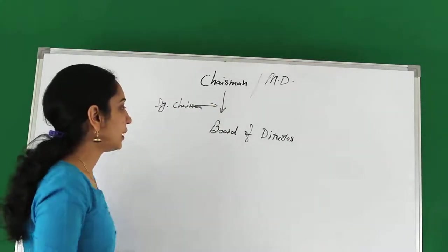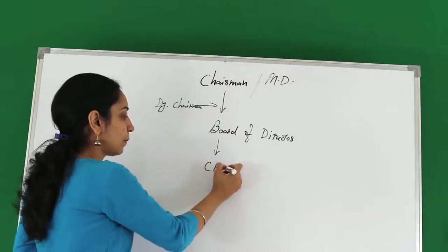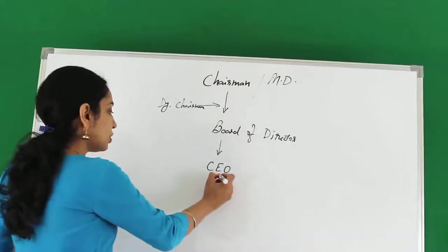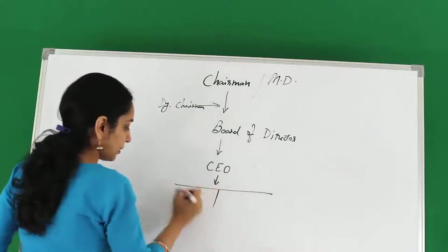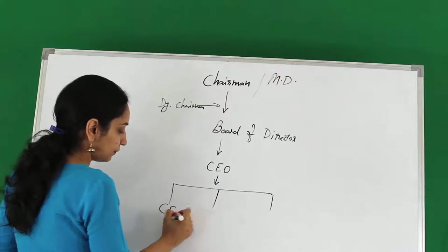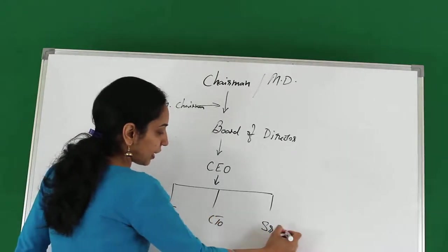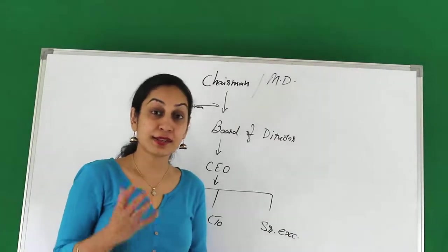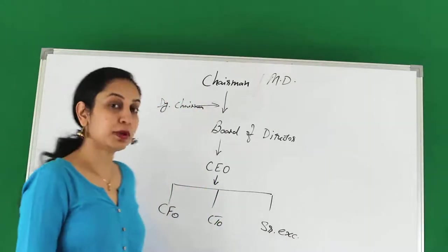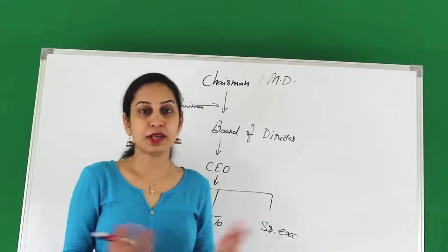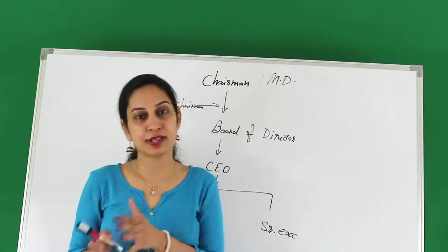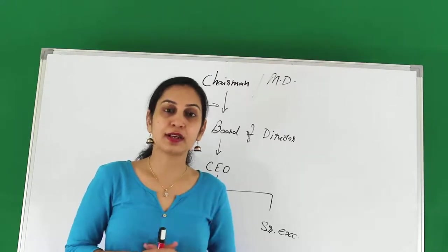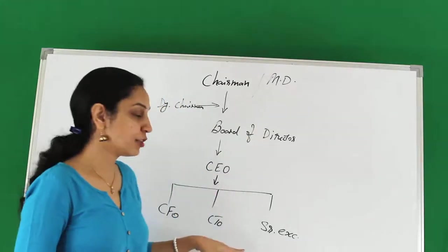Below the Board of Directors comes the CEO. The CEO is nothing but a high-profile employee of the business. Below the CEO we have other layers such as CFO, CTO and other senior executives — these form the senior management. The layer below this can be industry-specific, including Vice Presidents and Assistant Vice Presidents. All the transparency related to reporting actually works at this top layer.